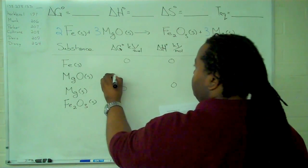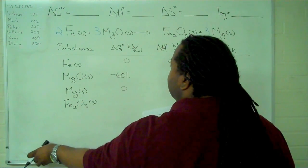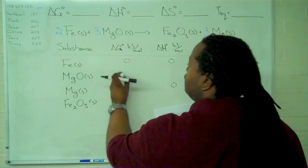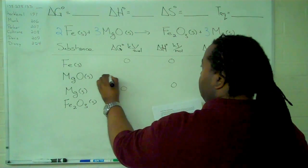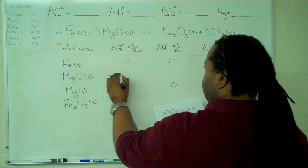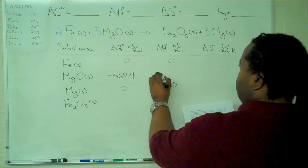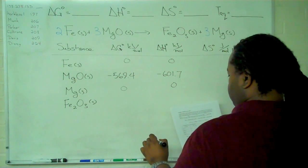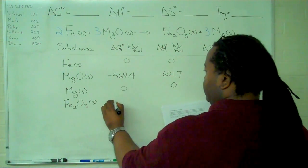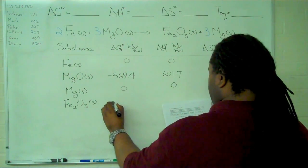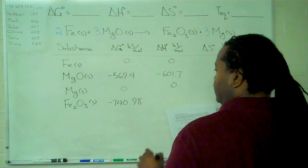So for the remaining values, we'll actually have to write these in. Make sure we're matching everything up correctly. That's minus 569.4, minus 601.7. And then for the iron 3 oxide, for delta G, we have minus 740.98,